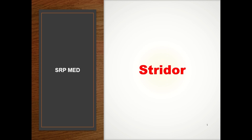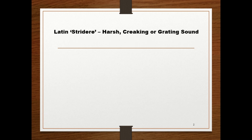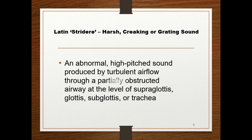Let's learn about stridor — its definition, types, and mechanism. It is derived from the Latin word 'stridor,' which means harsh, creaking, or grating sound. Stridor is defined as an abnormal, high-pitched sound produced by turbulent airflow through a partially obstructed airway at the level of the supraglottis, glottis, subglottis, or trachea.